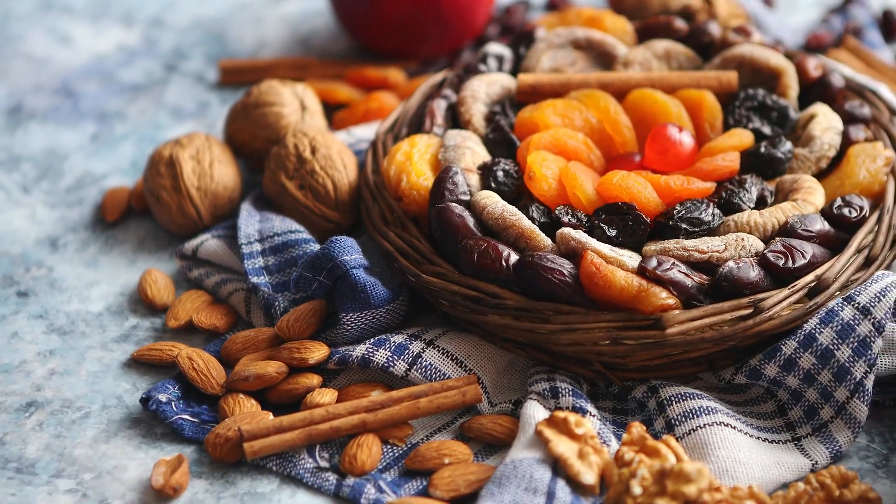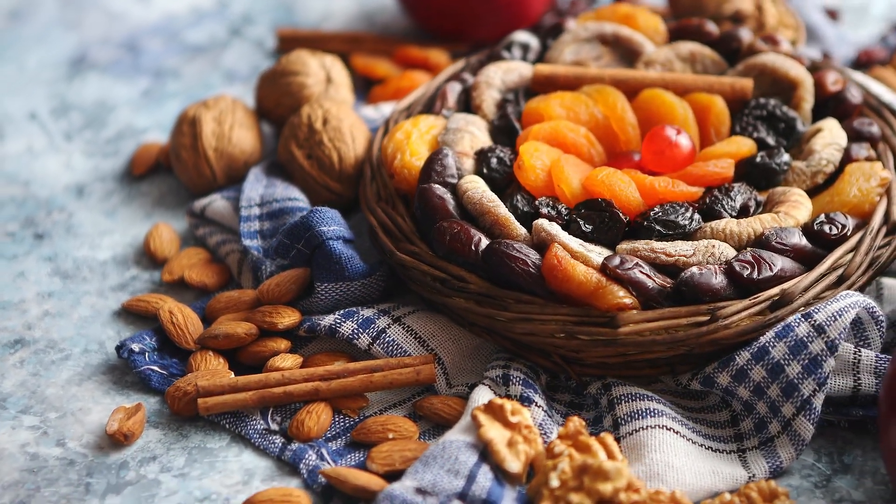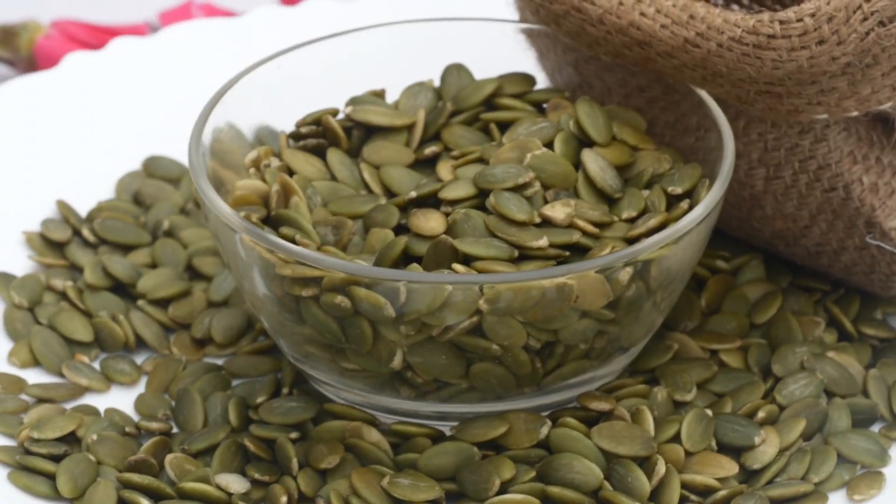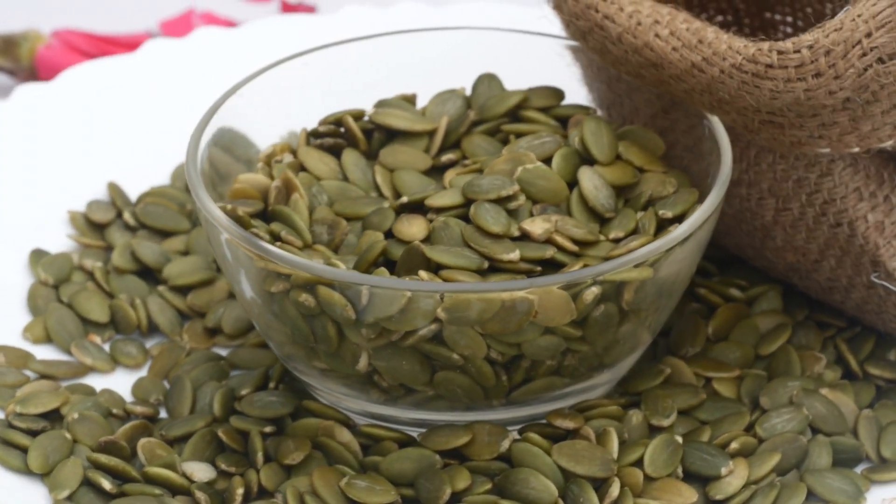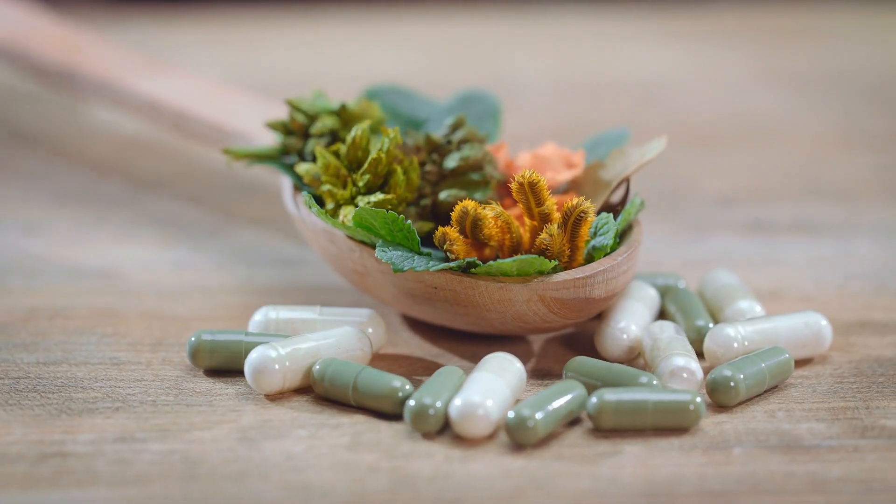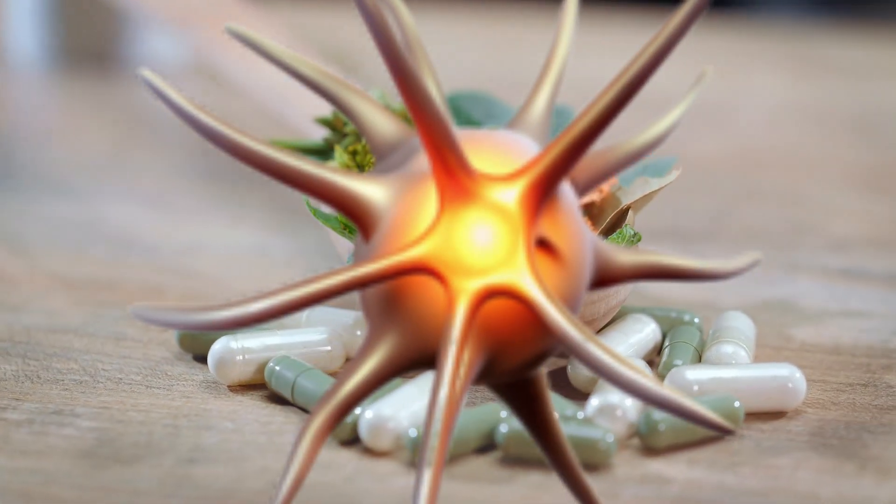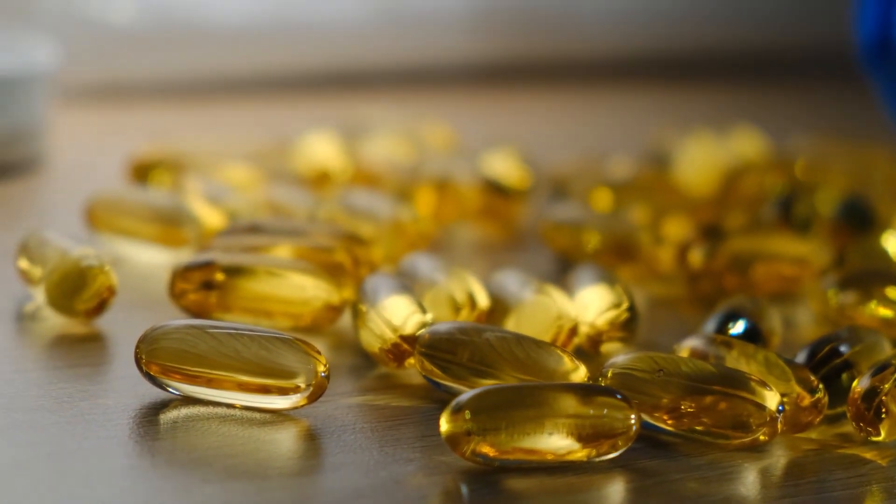Almonds, sunflower seeds, and hazelnuts are loaded with this vitamin. Aim for 15 mg daily. While diet usually suffices, a supplement might be beneficial if you're already dealing with nerve damage. Just don't go full 'more is better'—excess E can lead to bleeding issues.